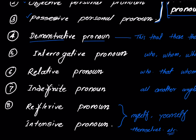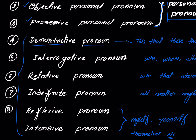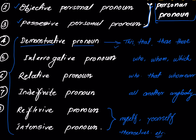Now we come to demonstrative pronouns. The examples of demonstrative pronouns are: this, that, these, those. All of these are pronouns. For example: 'This is my house' — here 'this' is a demonstrative pronoun.